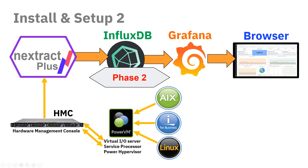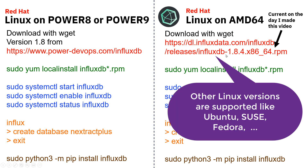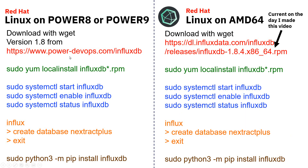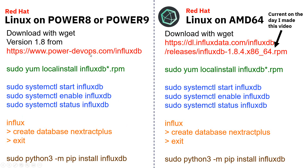Next up, phase two: InfluxDB — very simple to install. We have Linux on Power on the left and Linux on AMD64 or Intel on the right. The only thing that's different in the two cases is where you get the download. For AMD64, it's from InfluxData — that's the company behind InfluxDB.com. For the Power version, the guys at Power DevOps have a little page called InfluxDB with a list of all the downloads available. Then in both cases, we're going to do a sudo yum localinstall of the package you just downloaded.